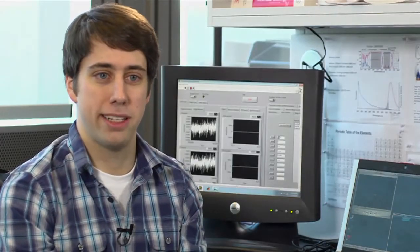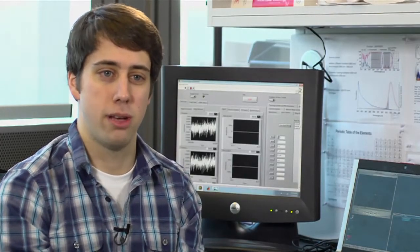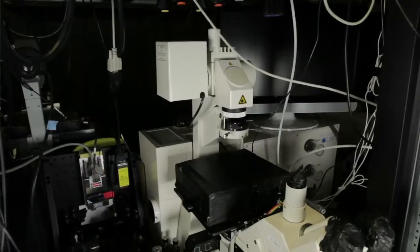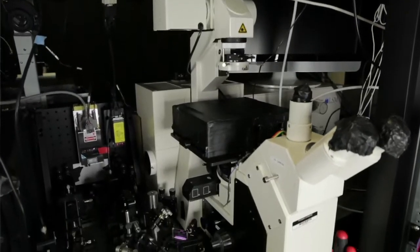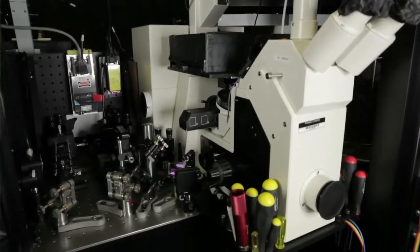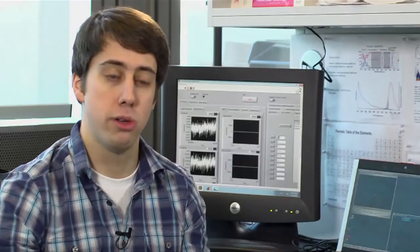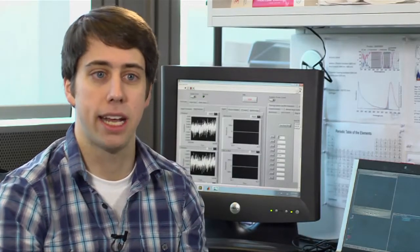On the market now, the highest end spinning disk confocal microscope can give you a 3D volume in about a second. Our 3D single particle tracking can do 10 microseconds, so that's five orders of magnitude faster, and the spatial resolution goes from 200 to 300 nanometers down to 10 to 20 nanometers.